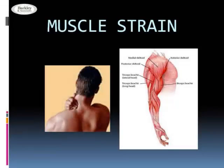Muscle strain is caused by overuse of muscle tendons, often with repetitive movement that results in inflammation. Signs and symptoms include pain, edema, and ecchymosis.